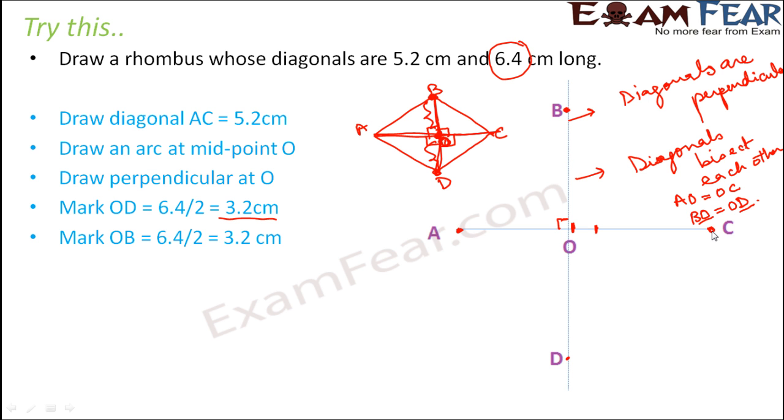So now we have got all the four vertices of the rhombus that is A, B, C and D. So all we need to do is we need to join AB, BC, CD and DA. So the structure that we get is nothing but a rhombus. So you see just knowing the two diagonals also we were able to draw a rhombus. That's because we knew the properties of rhombus that the diagonals are perpendicular and the diagonals bisect each other.